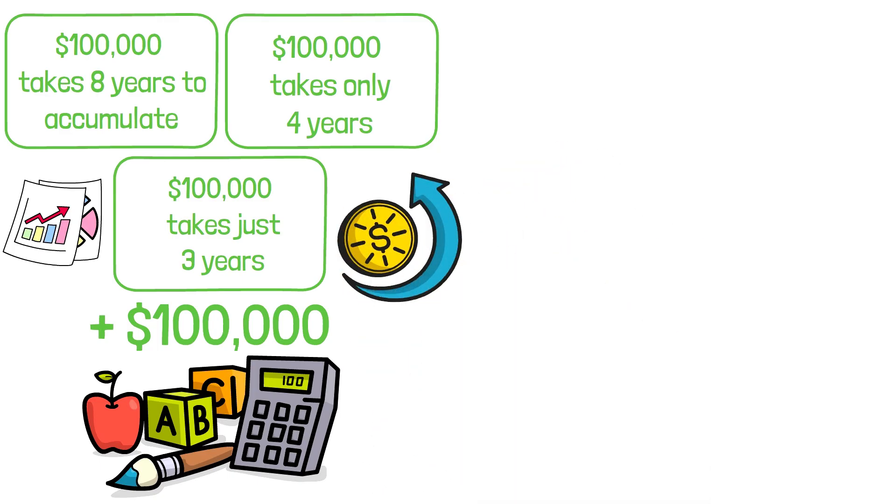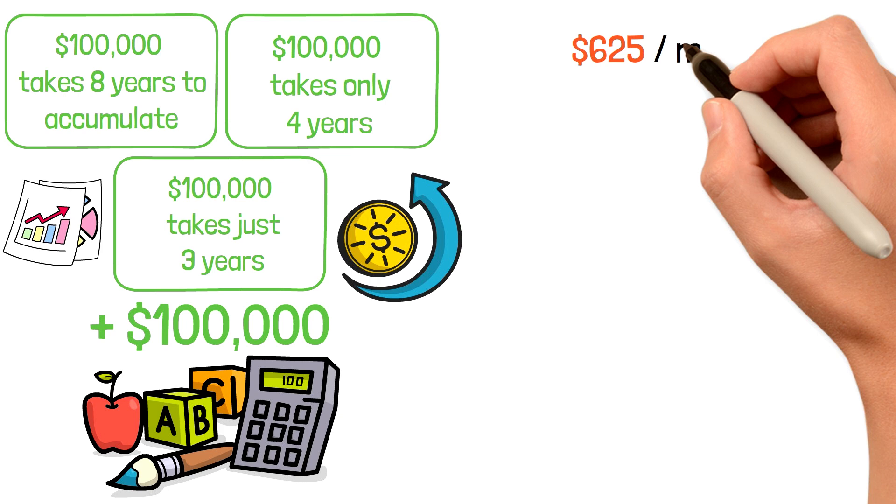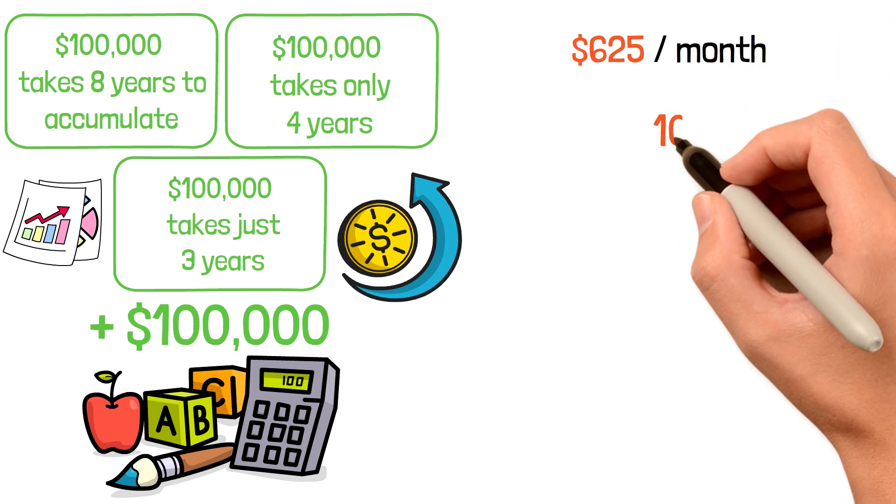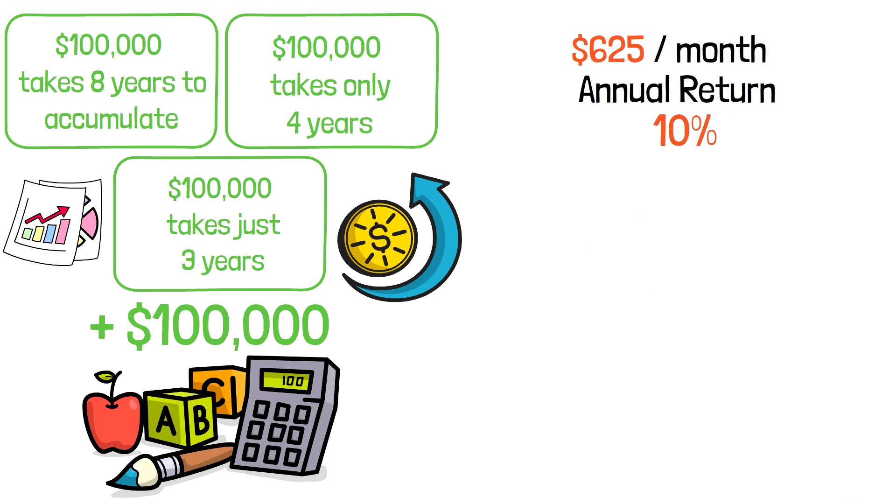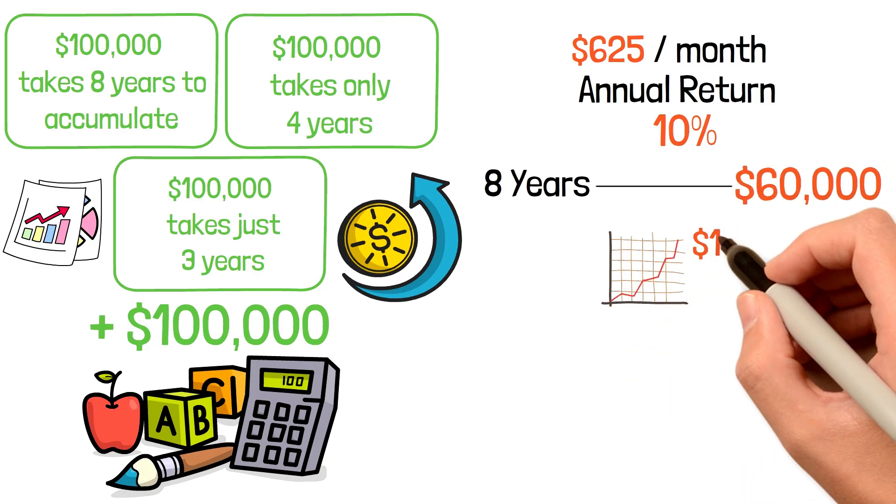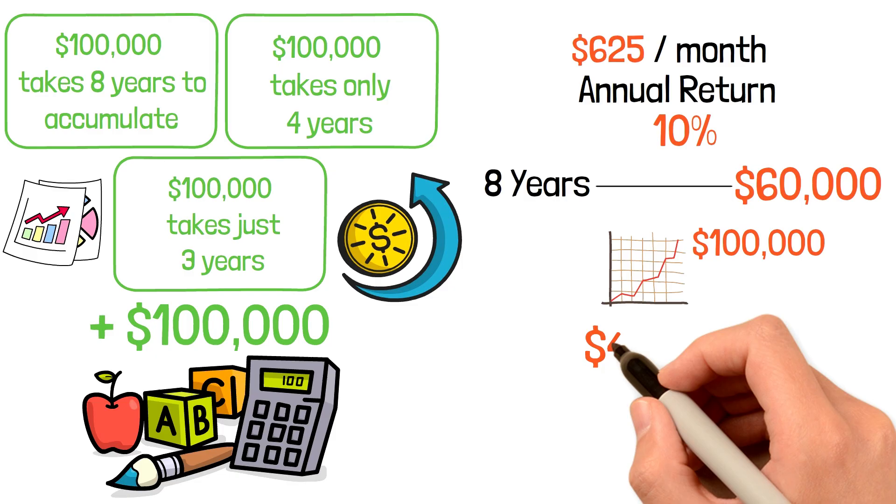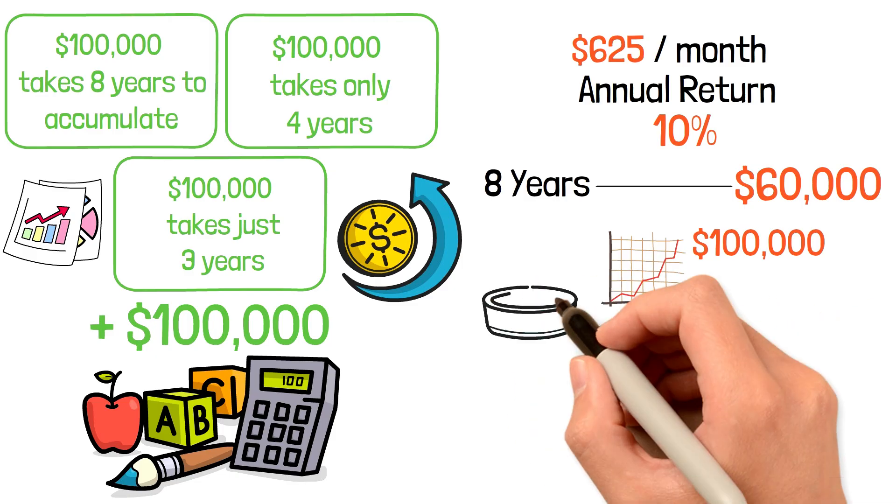Let's run the actual numbers. Say you invest $625 per month at a 10% annual return. After 8 years, you've contributed $60,000 of your own money. But your account has grown to approximately $100,000. That extra $40,000 came from compound interest.